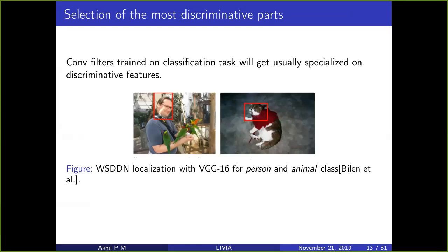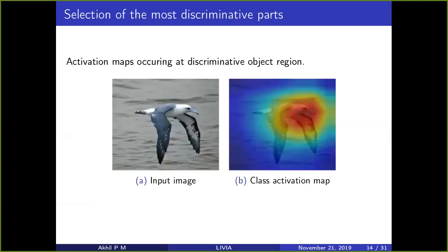When optimizing the classification objective, the classifier gets better accuracy by focusing on discriminative regions. So a typical weakly supervised detector like the BSPN localizes only the head of a person, because it doesn't need to see the full object to get a good localization score. The same thing happens with the class activation map approach — for example, you can see it has a strong activation only in the head part.